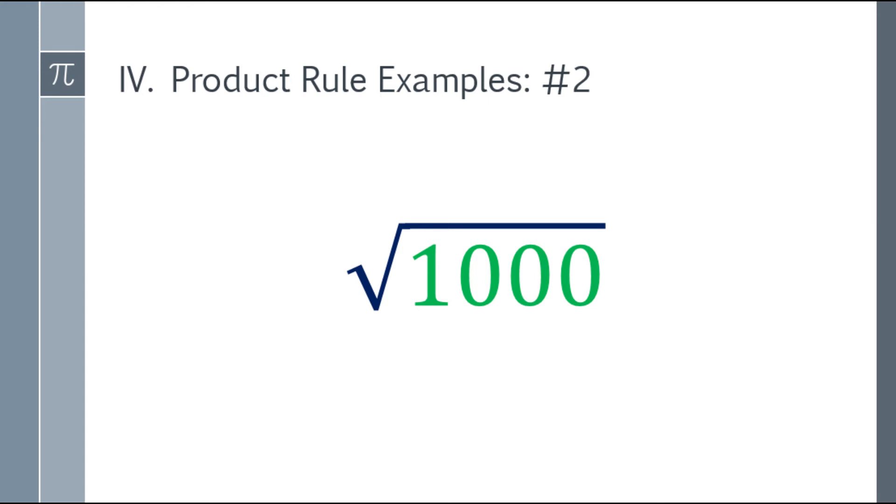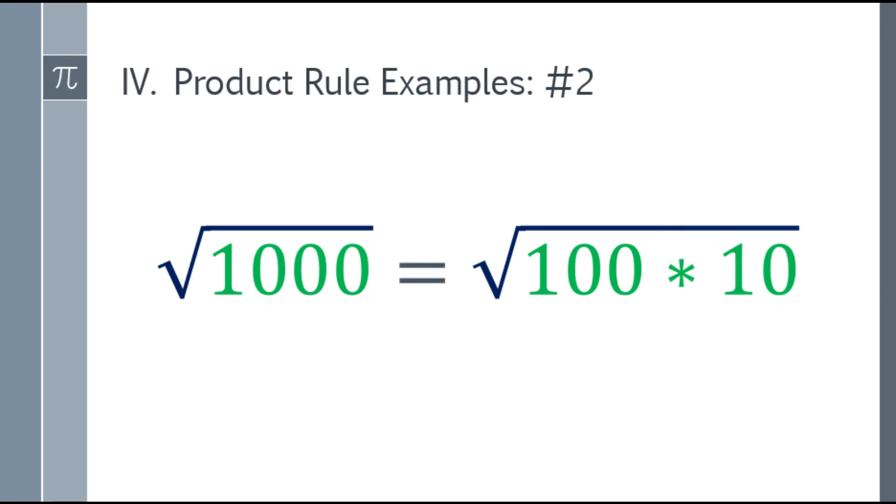Square root of 1,000. 1,000 is not a perfect square. So haanap tayo ng factors ng 1,000 na may perfect square. That will be 100. Tapos na-multiply natin siya ng 10. 100 is the perfect square.